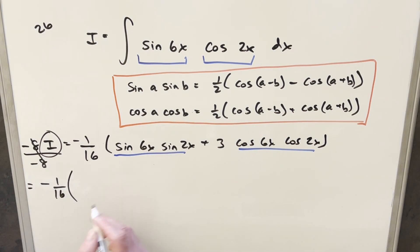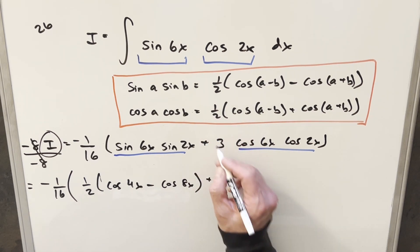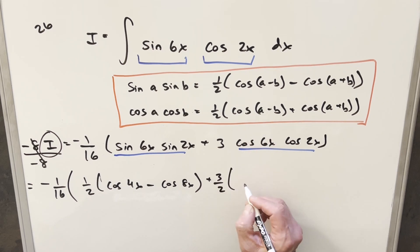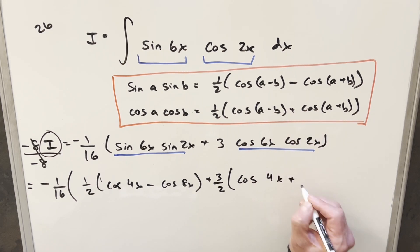We'll have this out in front. For sine 6x sine 2x, we're going to have 1 half. Then it's going to be cosine the difference of the angles. So it's going to be cosine 4x minus the sum of the angles, cosine 8x. And then for cosine, it's really similar. We have this 3 out front, so 3 times 1 half. We'll have this back as 3 halves. Then here, it's going to be the same angles. This is just going to become different signs. So it's going to be cosine 4x plus cosine 8x.